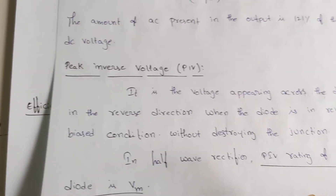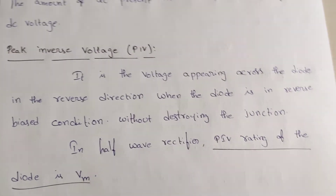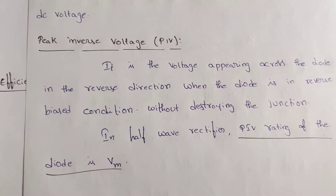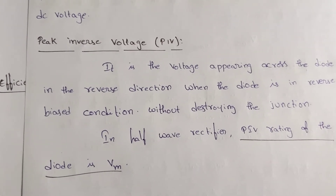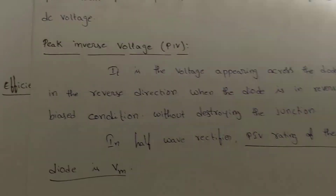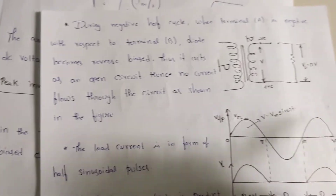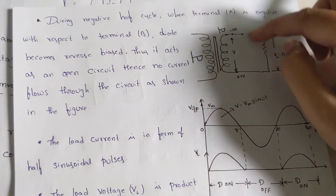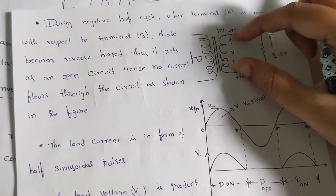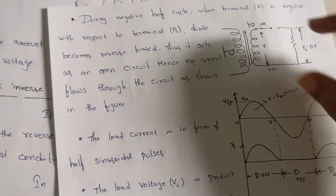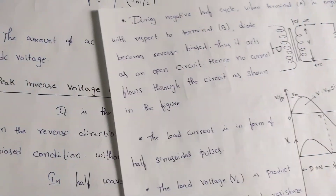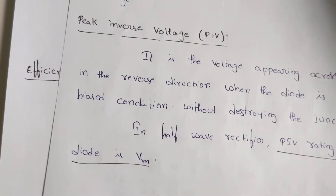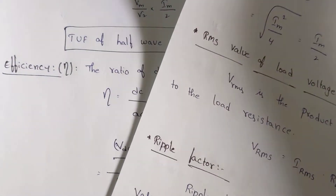The next parameter is peak inverse voltage (PIV). In the reverse bias condition, the maximum voltage that appears across the diode without destroying it is called the peak inverse voltage. In reverse bias, the voltage across the diode is V = VM sin(ωt), so the peak inverse voltage of the half wave rectifier diode is VM.